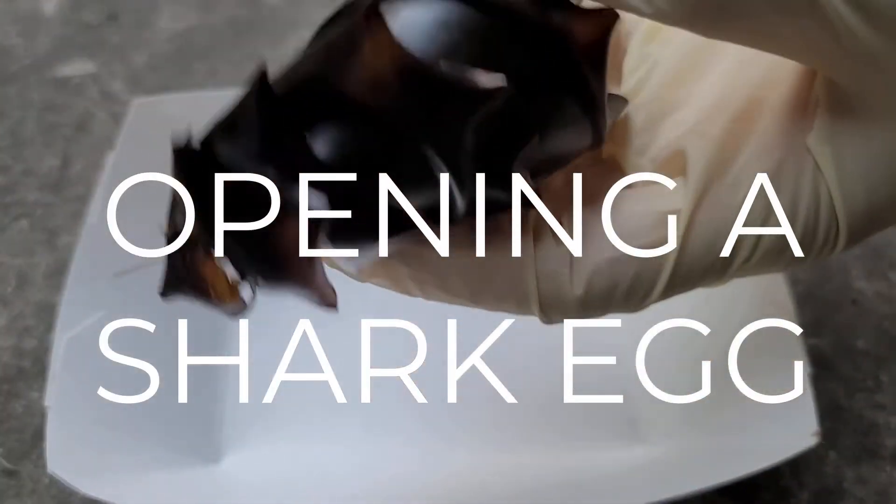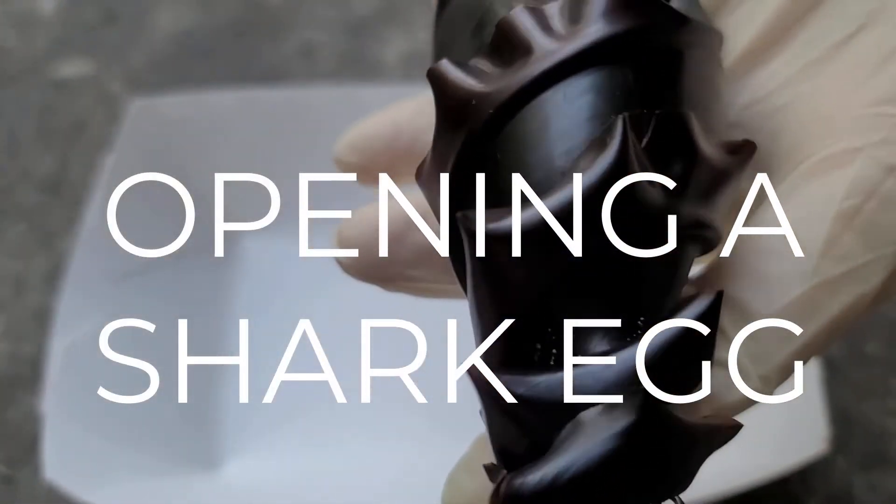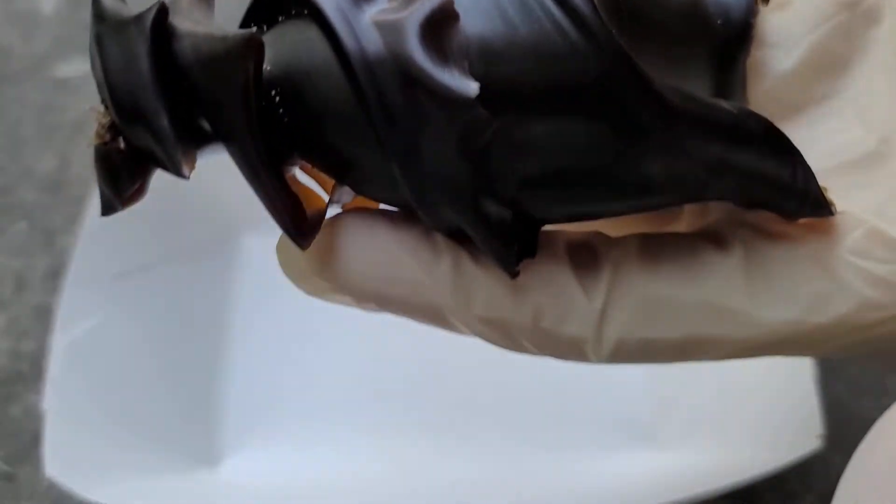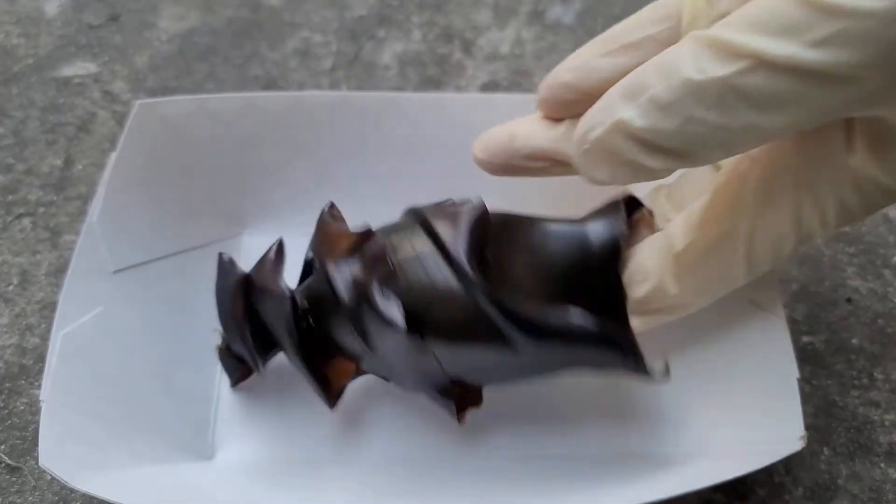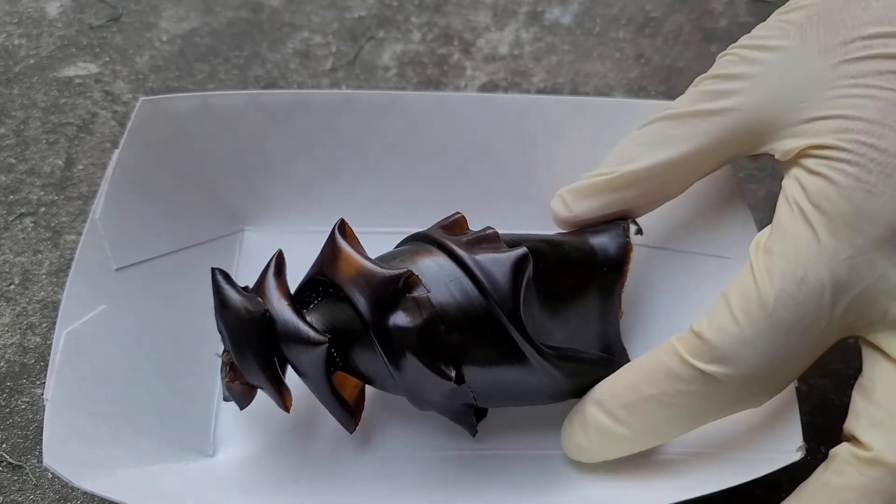Alright, so right here I have this weird looking thing which kind of looks like seaweed, but it is actually a shark egg, or the shell which carries the egg.